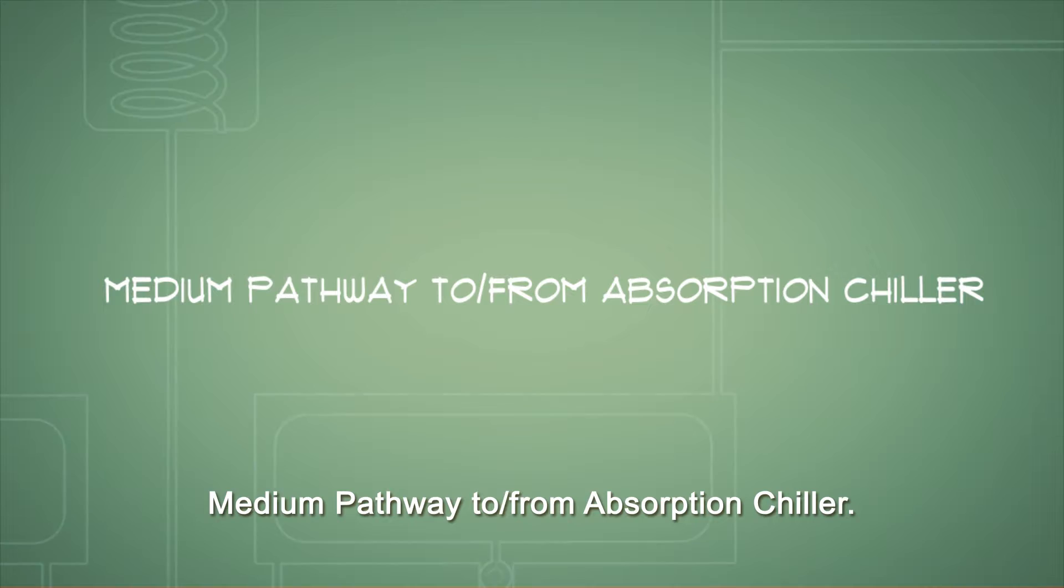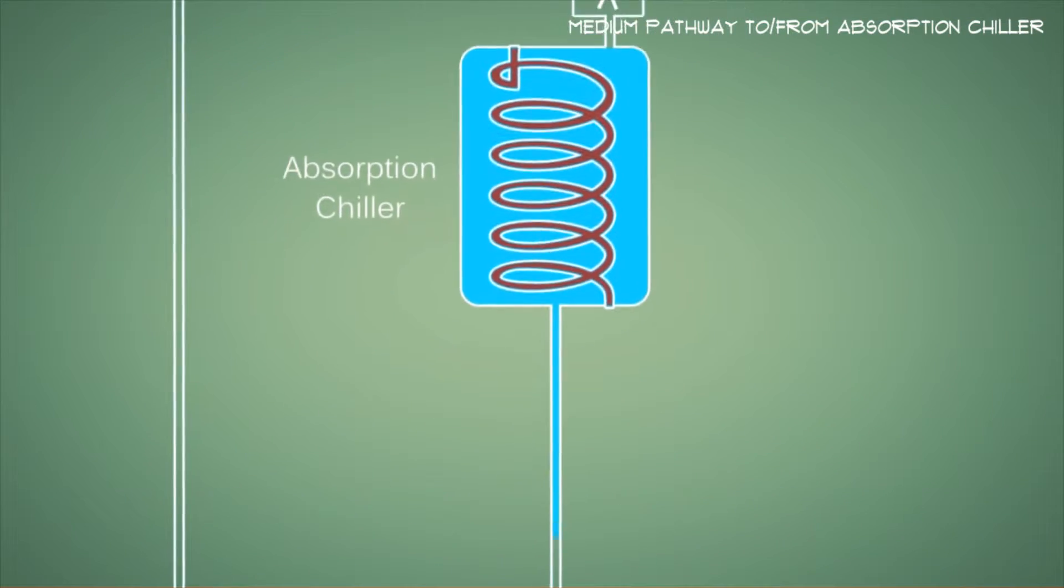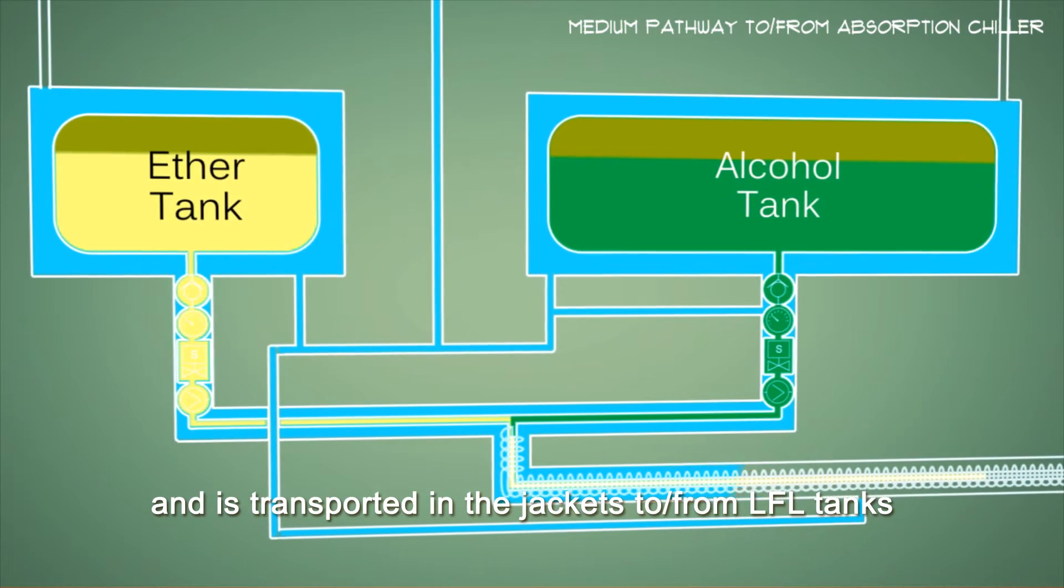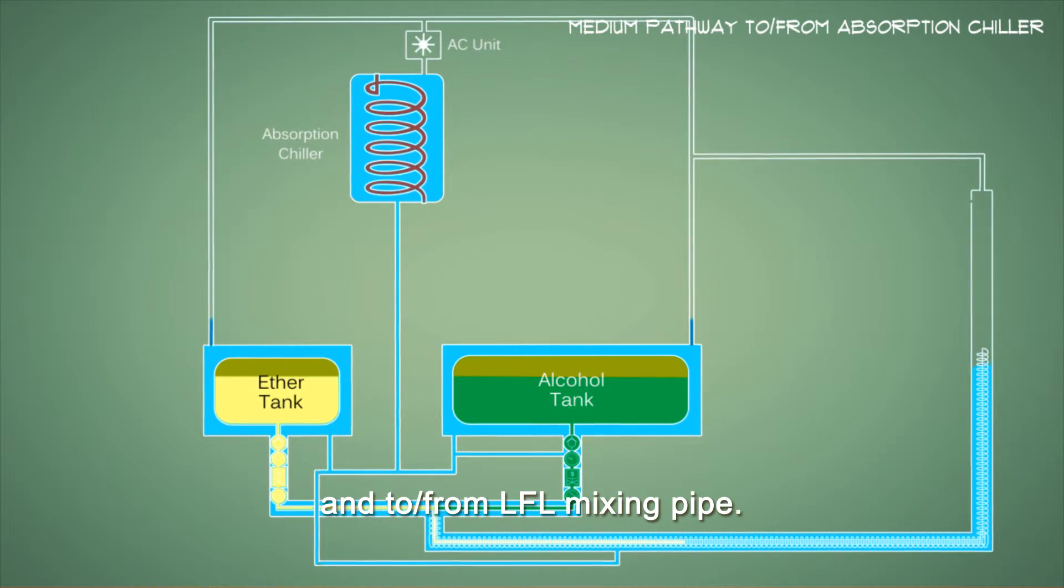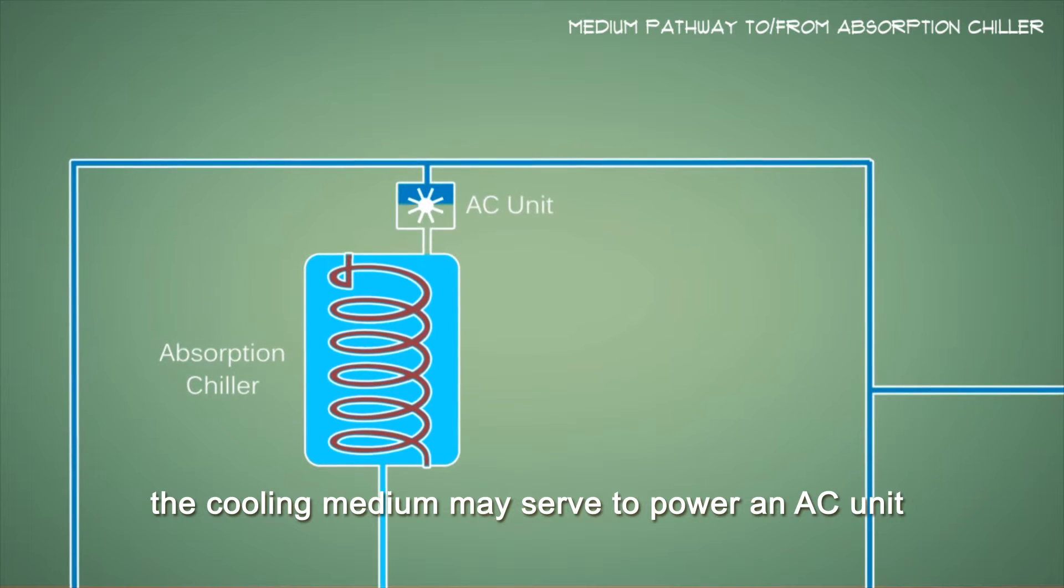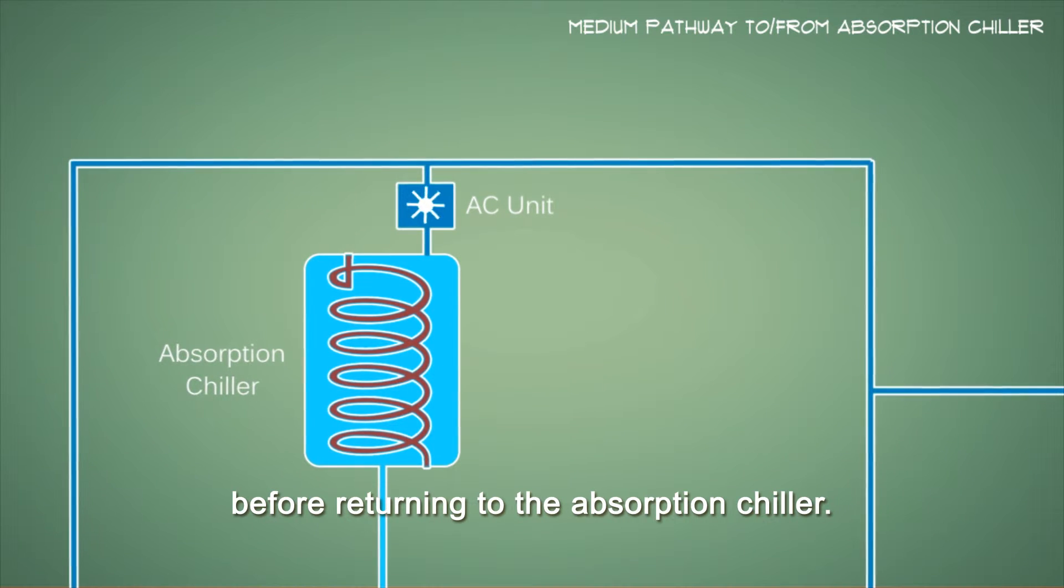Medium pathway to and from absorption chiller. The cooled medium leaves the absorption chiller and is transported in the jackets to and from LFL tanks and to and from LFL mixing pipe. Depending on where the vessel is sailing, the cooling medium may serve to power an AC unit before returning to the absorption chiller.